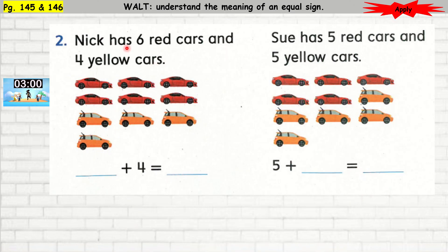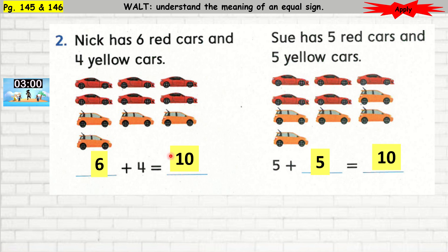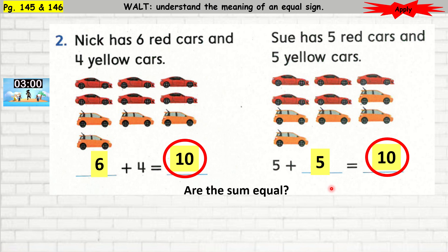Question number 2: Nick has 6 red cars and 4 yellow cars, so the missing number is 6, and 6 plus 4 is equal to 10. Sue has 5 red cars and 5 yellow cars; we're missing the 5 yellow cars, and 5 plus 5 is 10. Are they equal? Yes, because 6 plus 4 is 10 and 5 plus 5 is 10. The sums are equal.